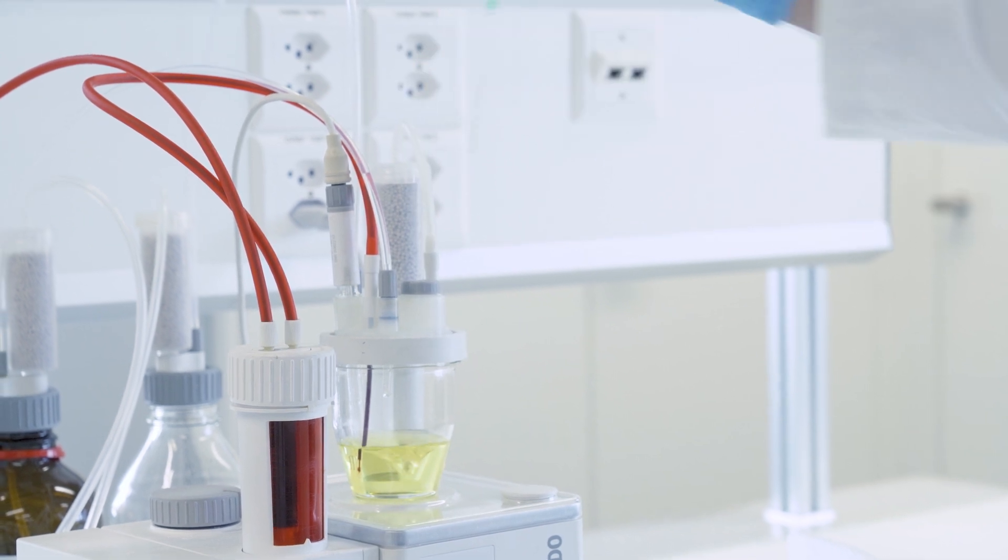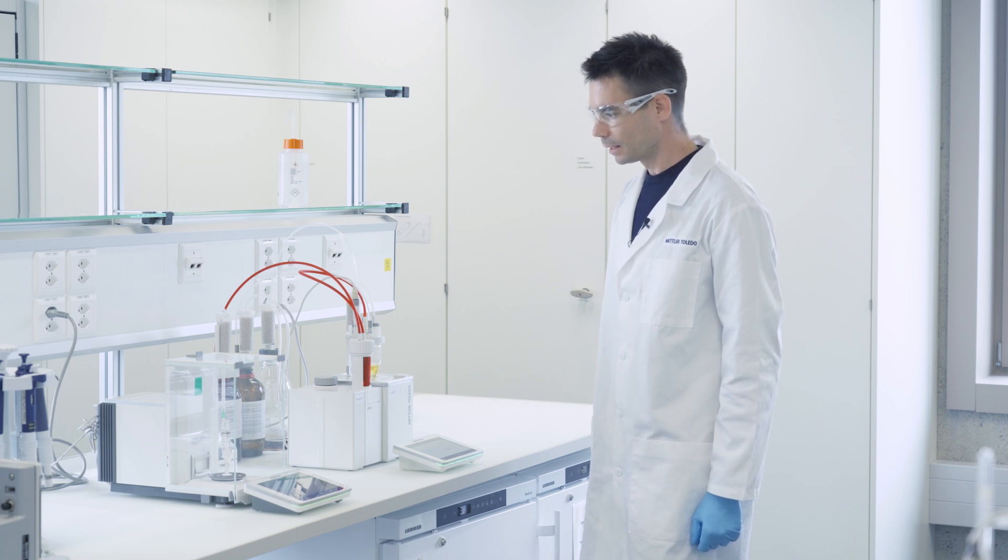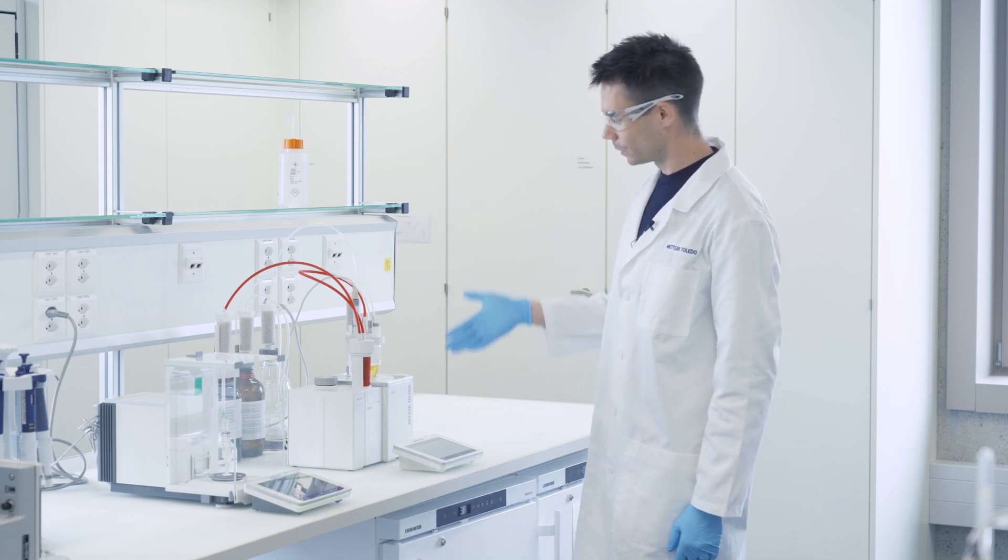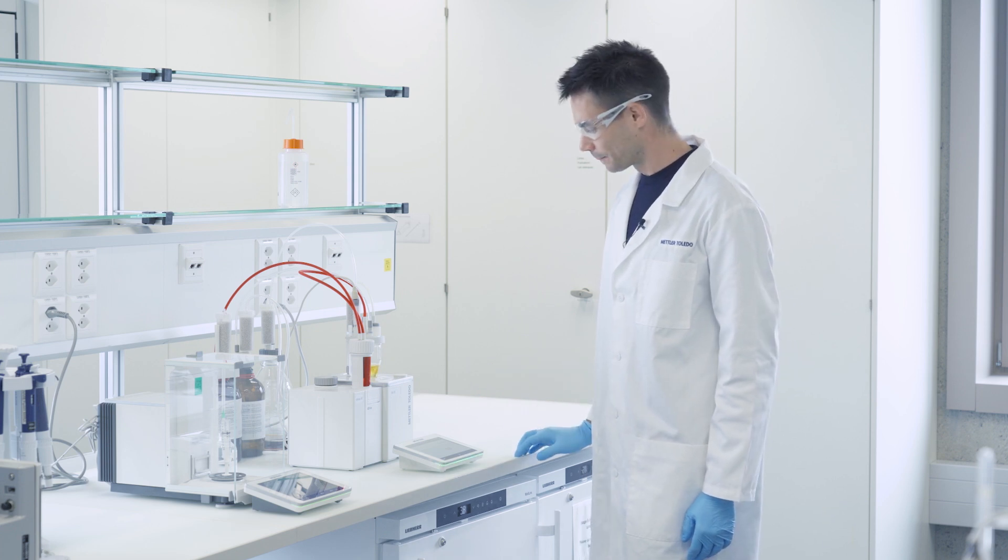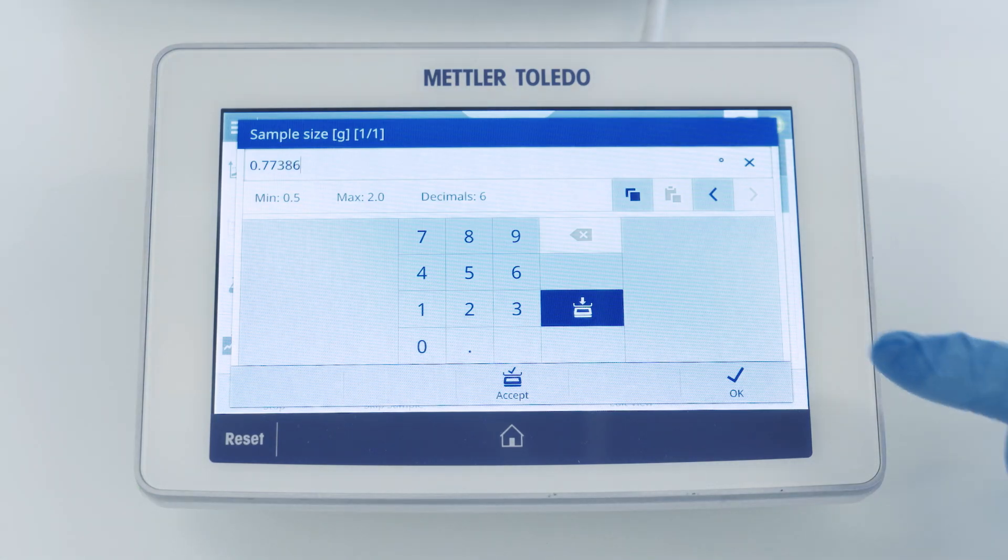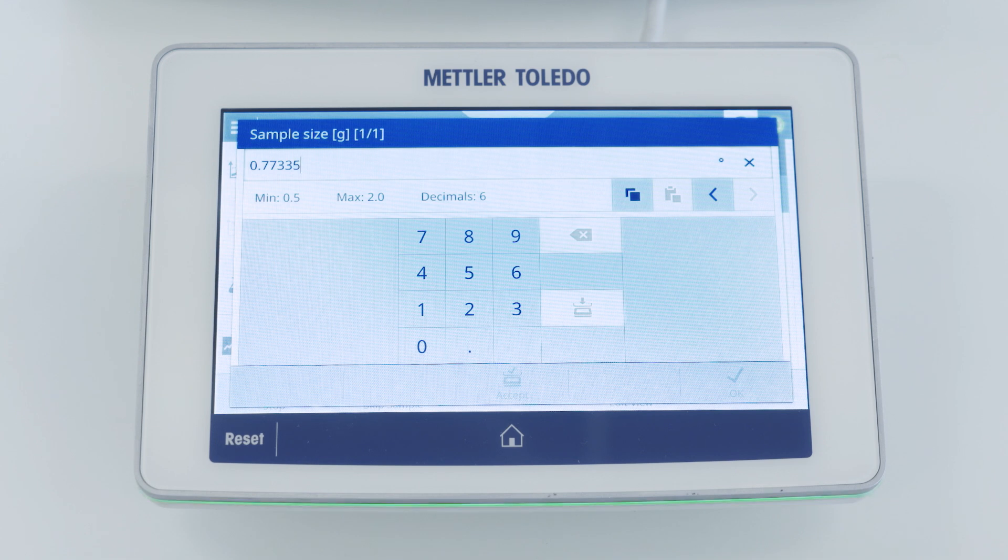We put the syringe back on the balance. And because the balance is connected to the titrator the weight is transferred automatically and we can just accept the weight as soon as the balance is ready. In the background the titrator has already started the titration because it only needs the sample size at the end for the calculation of the water content.